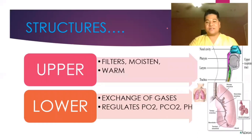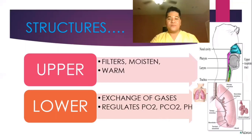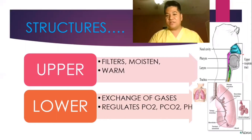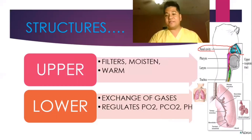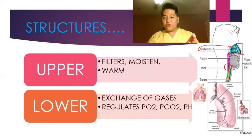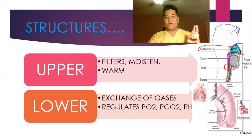Looking at the structures, we have the upper and lower portions. The upper respiratory tract comprises your nose, two nasal shells, the nasal cavity, then your pharynx and larynx. The pharynx is a pathway for both air and food, but they are separated — if it is air, it goes to your larynx, where your voice box is located, and then to your trachea. If it is food, it goes from your mouth to your pharynx and then to your esophagus.